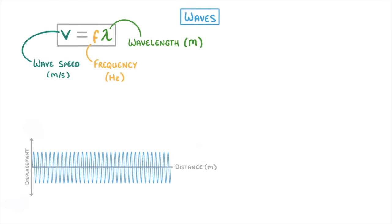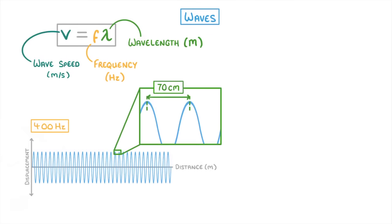To see how this works, let's imagine we had a sound wave that had a frequency of 400 hertz and a wavelength of 70 centimeters. What is its wave speed? Well, in this case, all we'd have to do is convert the 70 centimeters to 0.7 meters, because we always want our wavelength in meters, and then multiply it by the frequency of 400 hertz, which gives us 280 meters per second as our wave speed.